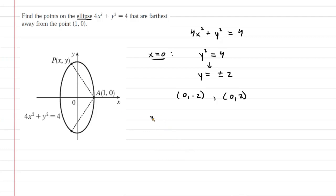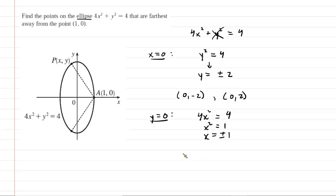Similarly, we can let y equal 0 in the equation of the ellipse. The y squared term cancels, giving us 4x squared equals 4. Dividing both sides by 4, we get x equals plus or minus 1. That gives two additional points: (negative 1, 0) and (positive 1, 0), represented on the diagram.